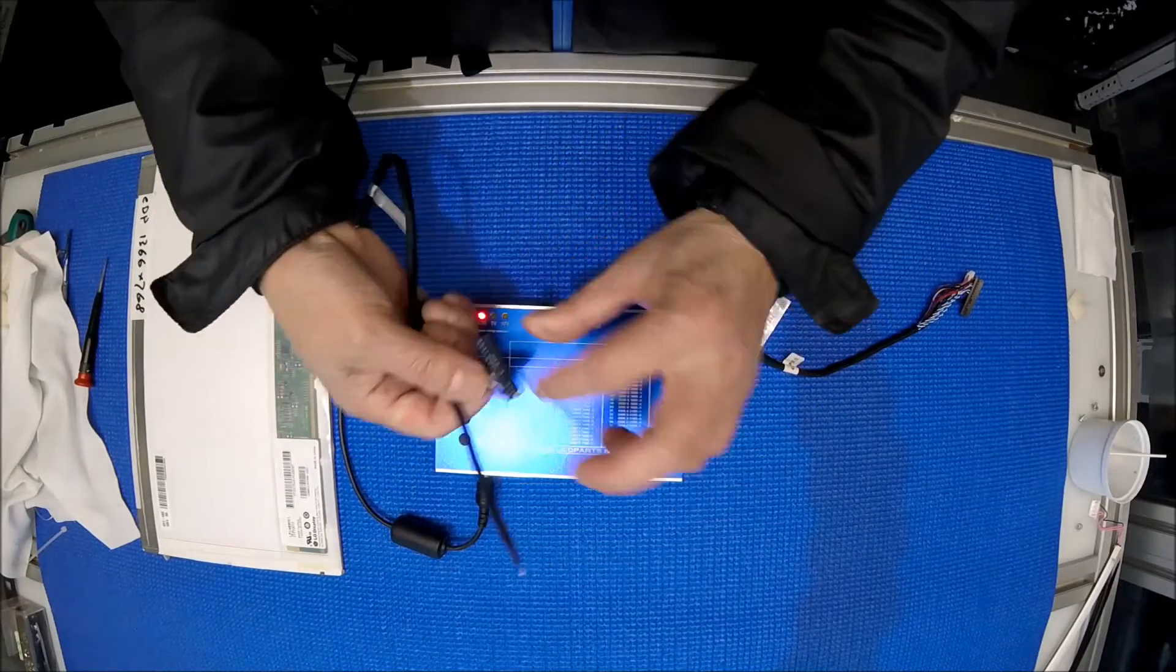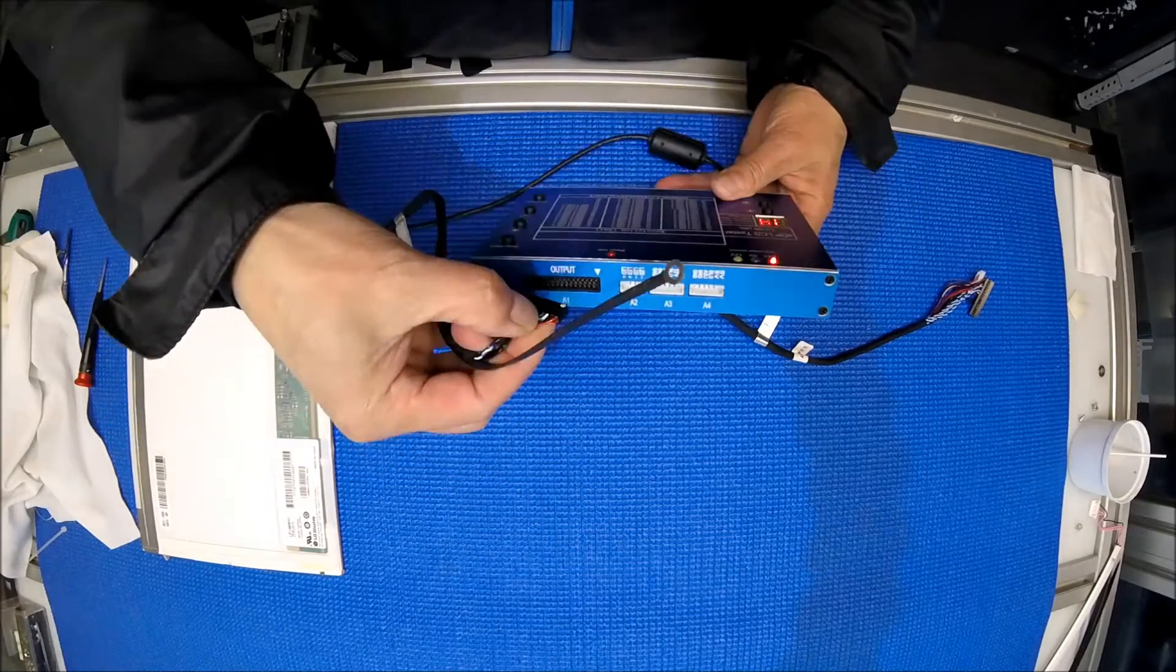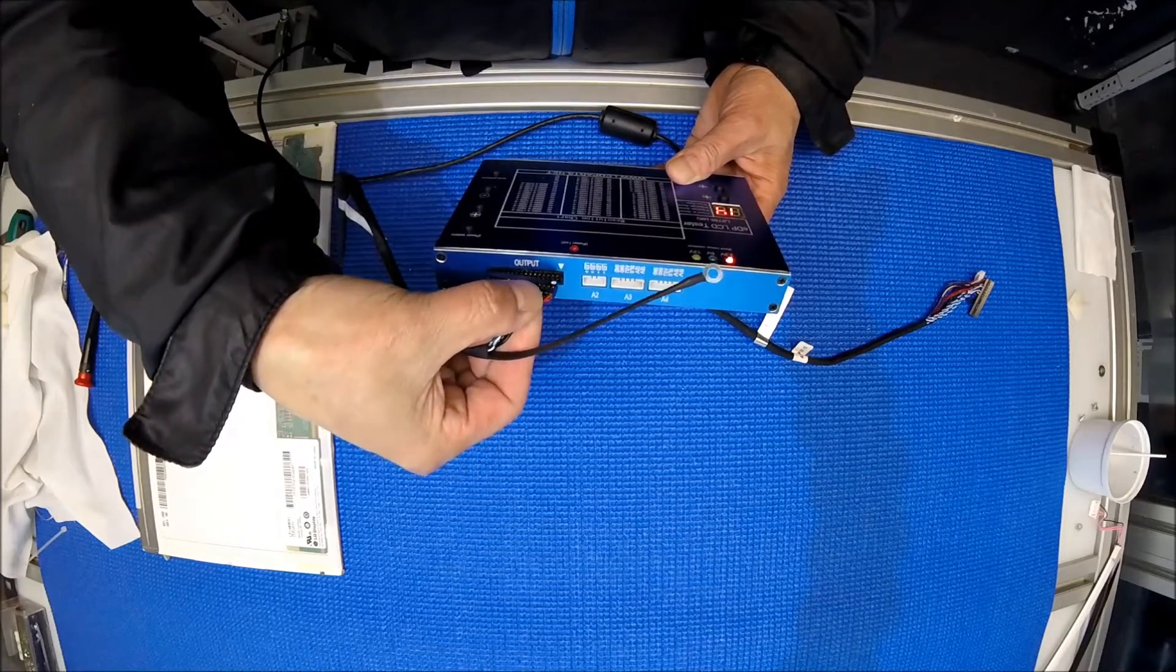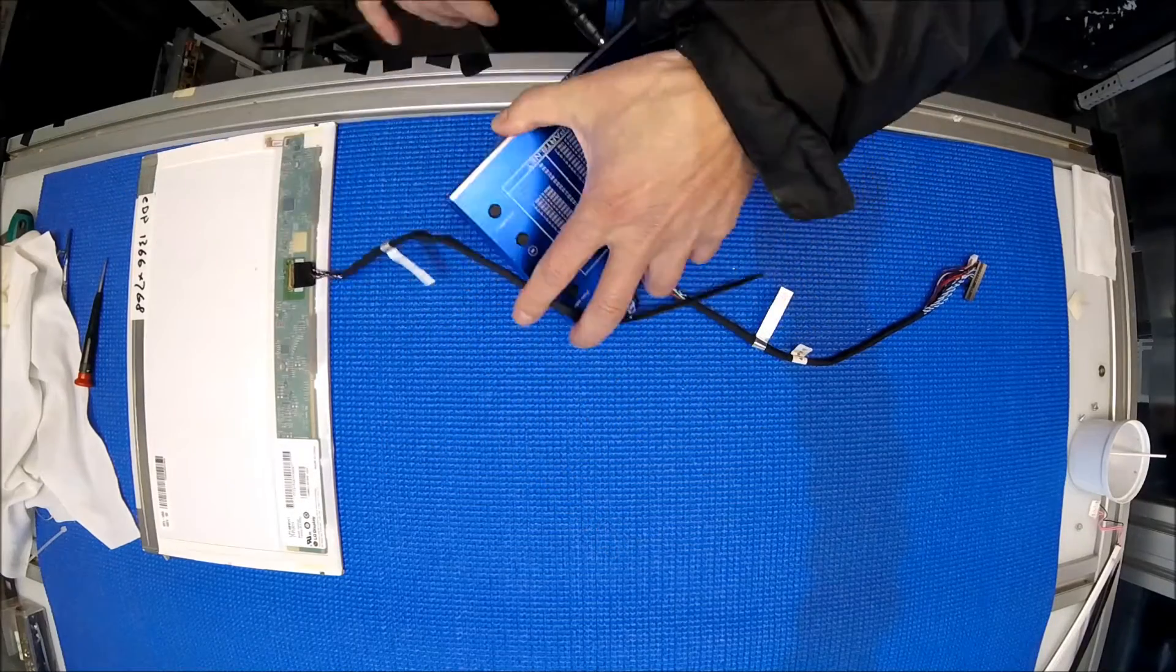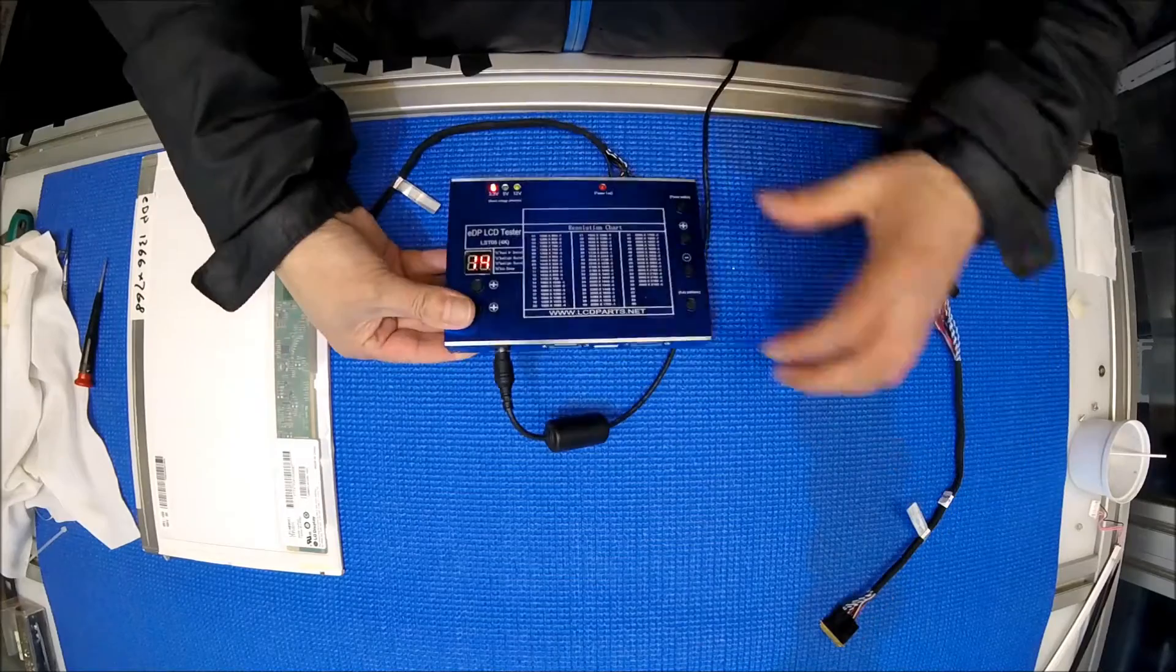You've got to be using 30-pin. You connect this end to the screen that you want to test. Connect this end. You need to match this white dot to this white arrow. That means you're in the correct direction. You push it in.